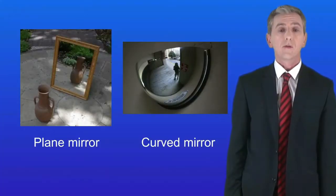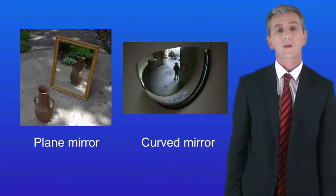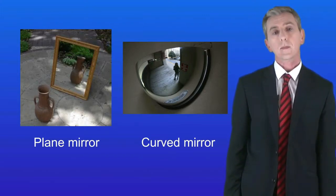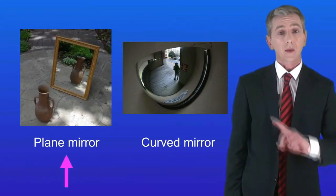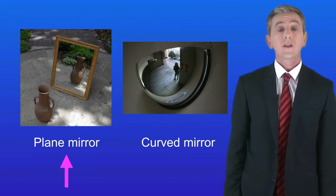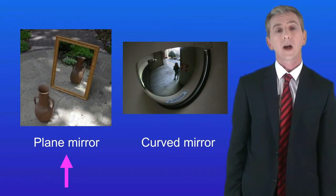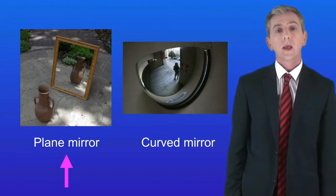There are two main types of mirrors: plane mirrors and curved mirrors. Plane mirrors are flat, whereas curved mirrors are not flat. In GCSE physics we only need to describe reflection using plane mirrors, in other words flat ones.